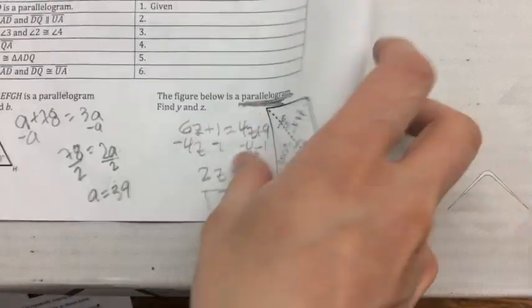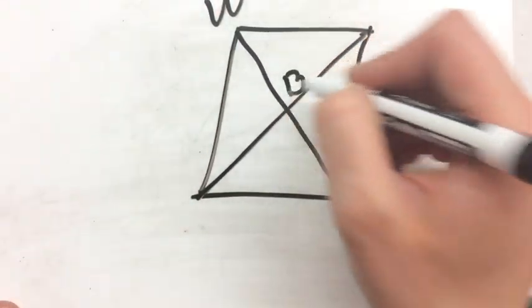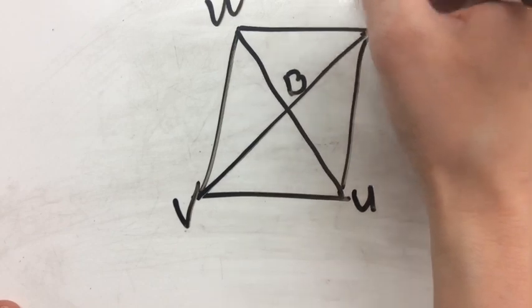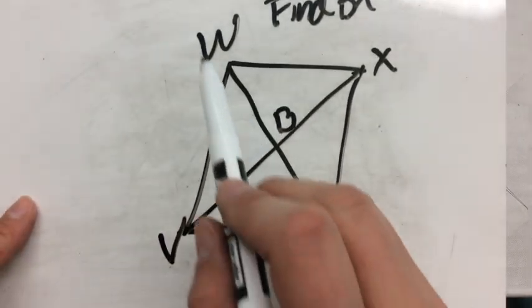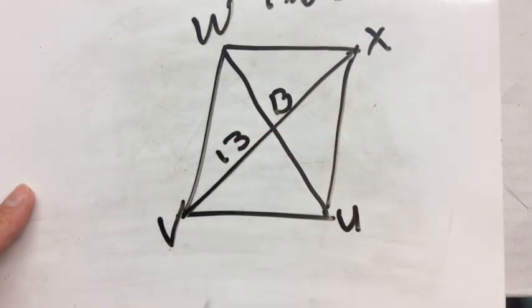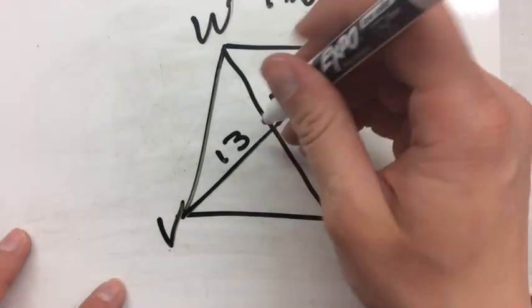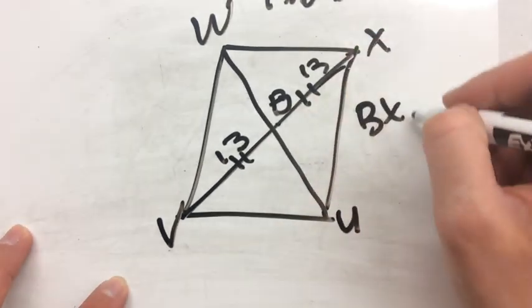Here's another example: if VB is 13 and we want to find BX, our theorem says that in a parallelogram the diagonals are bisected, meaning those two halves are congruent. So BX also has to be 13.